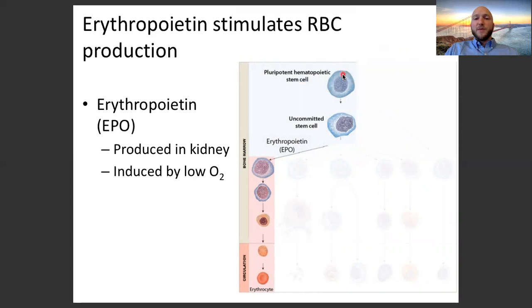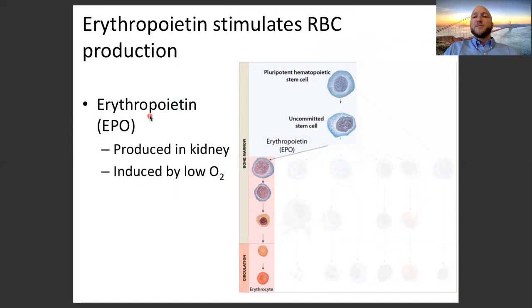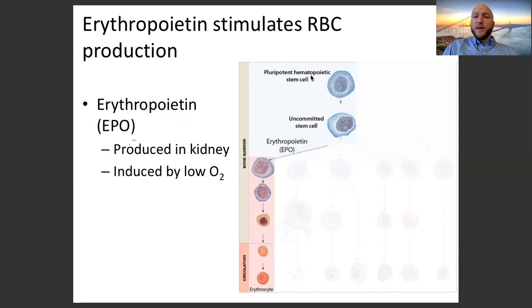So we have our pluripotent hematopoietic stem cell in red bone marrow. How does it know to become a red blood cell? It gets a signal from a hormone called erythropoietin — EPO for short. Know the abbreviation; it's important. EPO is produced in the kidneys when they detect low levels of O2. That erythropoietin then tells the pluripotent hematopoietic stem cells to become erythrocytes, and the cell goes down a path of maturation which leads it to becoming an erythrocyte.